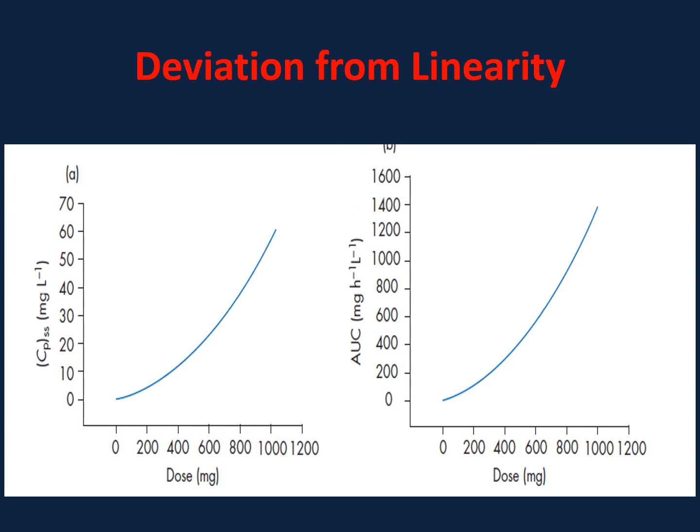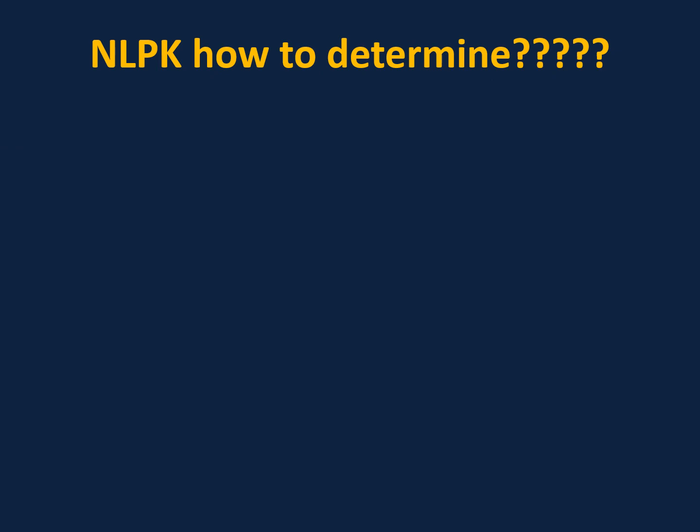If any deviation occurs in this relationship, as shown in the picture, you can observe that concentration and dose no longer increase proportionately — there is a sudden unexpected increase. Similarly, in the AUC versus dose plot, there is a sudden rise in AUC after a particular dose. These kinds of deviations are due to non-linear pharmacokinetics.